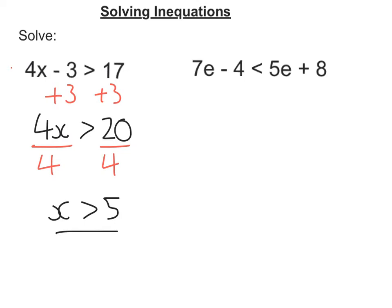For the second one, again I want to get my number terms on one side, letter terms on the other. So I'm going to move this 4 first. So it's take away 4, so I'm going to add 4 to both sides. So I'm going to get 7e, because my 4s cancel, is less than 5e plus 8 plus 4, well that's plus 12.